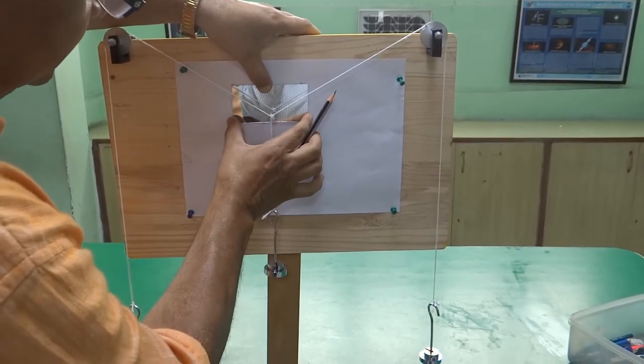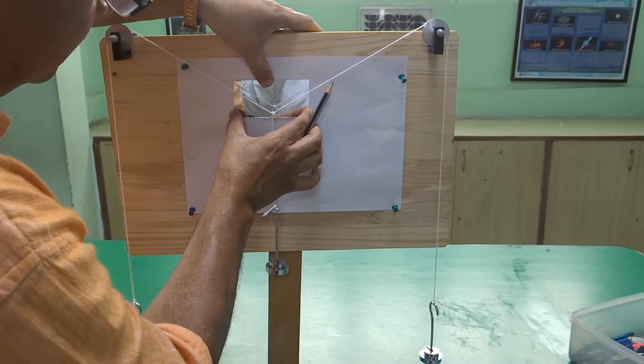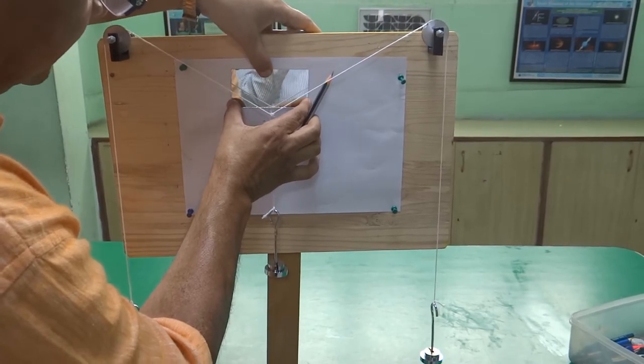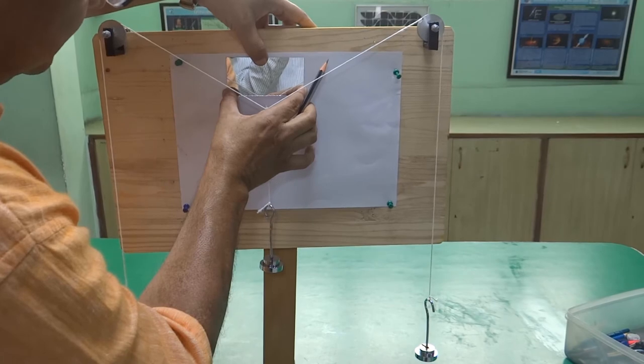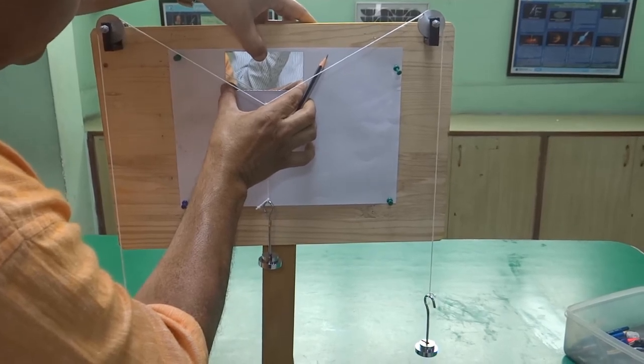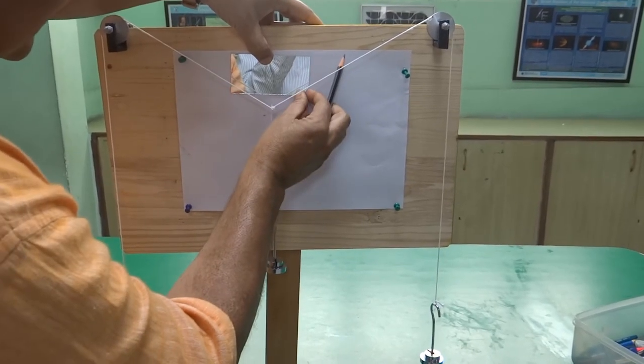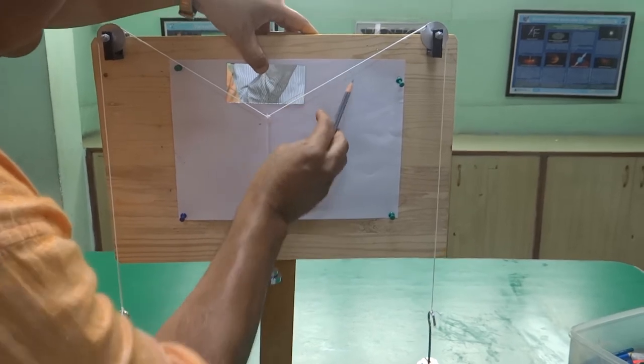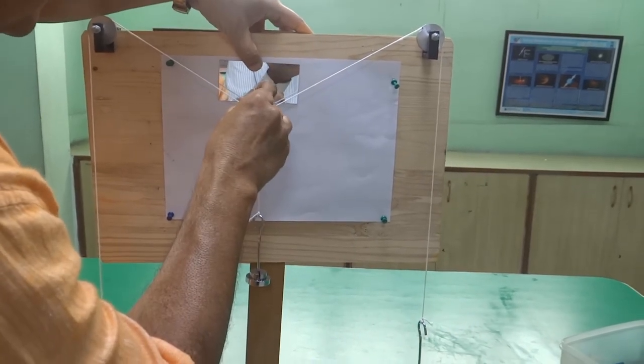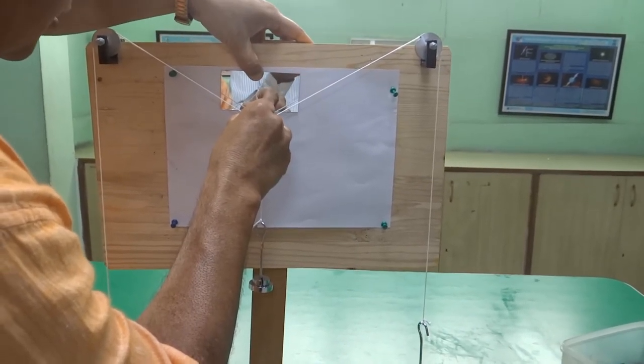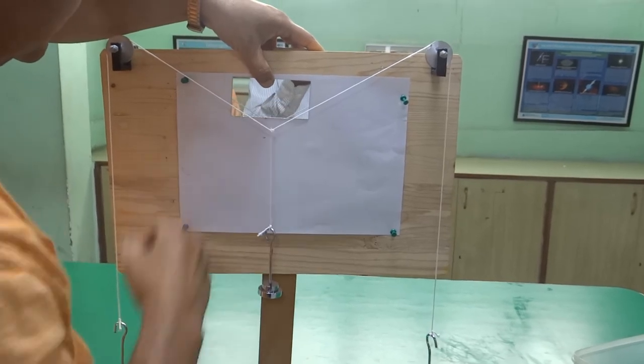Now move this strip little up straight without moving left and right. And bring node right at the corner of this mirror strip. Once it comes to the edge of the mirror strip, mark this node point also. So observation point as far as concerned is over.